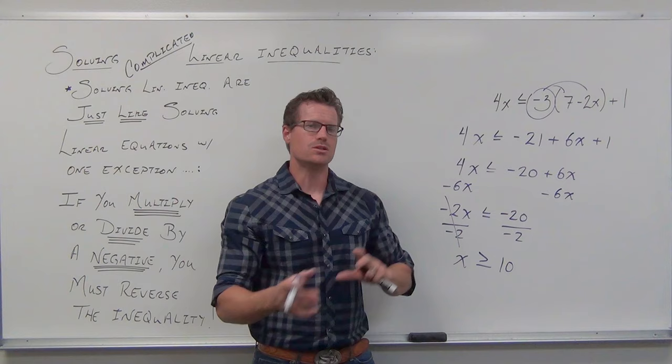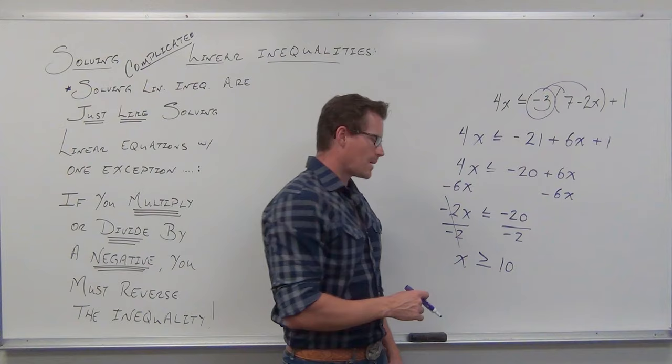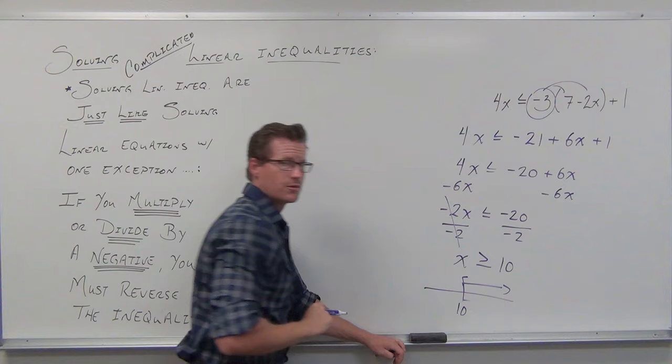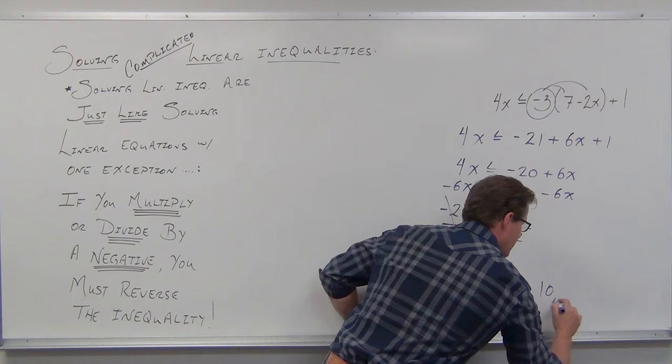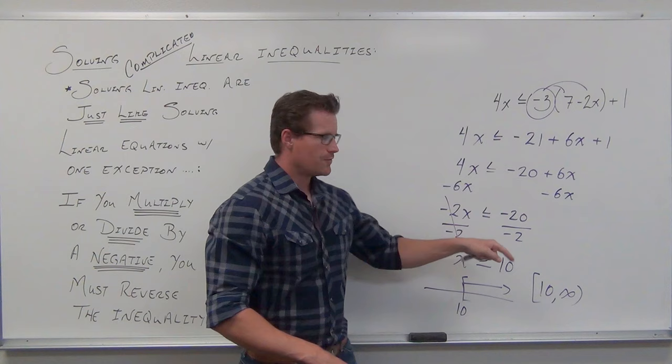No matter what makes sense to you best, you're going to get the same answer — choose the way that looks best to you. Because my variable was on the left-hand side, I can start at 10; it points to the right. I include the value itself given the greater than or equal to sign. In interval notation: starting at 10, ending at infinity, using a bracket for 10 to include it in the solution set. Infinities can't be included, so use parentheses.